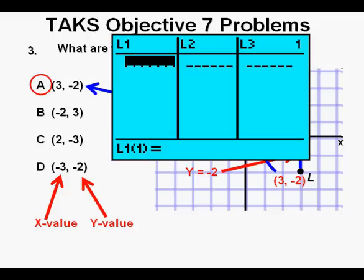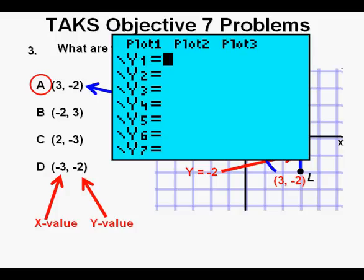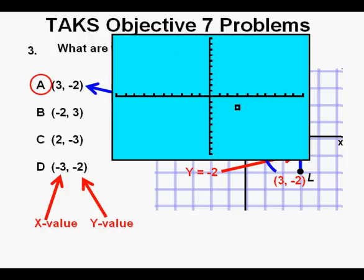Alternatively, we can go to our calculator and press STAT ENTER. We can enter the coordinates here under L1 and L2. From here, we can go to the y equals key in the upper left of the keypad. We go up to plot 1 and activate it by pressing ENTER. Then press GRAPH, and here we see the point for answer A.